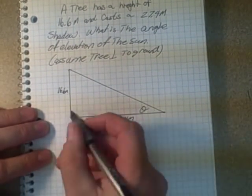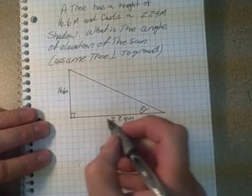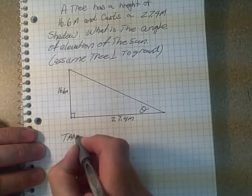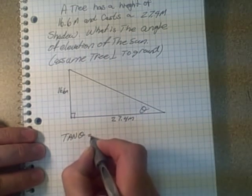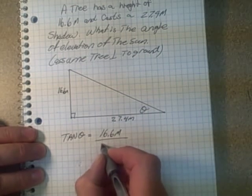Well, we can use, this is 90 degrees because we're assuming that's perpendicular to the ground. So we can use the opposite and adjacent sides. So the opposite and adjacent sides is tan. Tan theta is equal to the opposite side over the adjacent side.